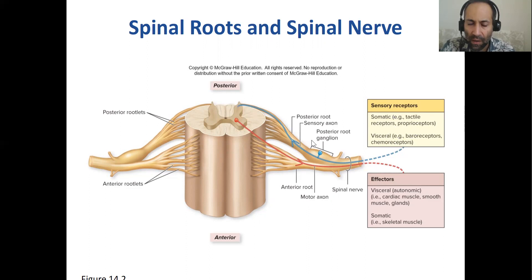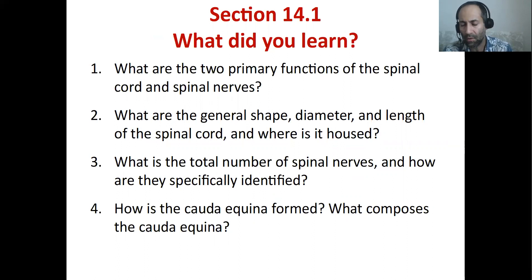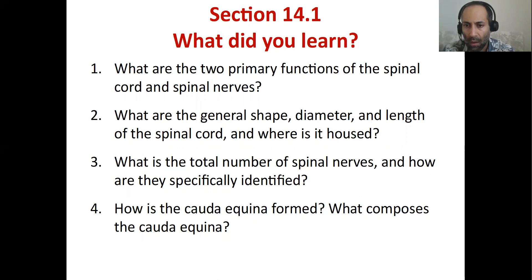The anterior motor root sends signals to your skeletal muscles in the somatic system, and also to your cardiac smooth muscle and glands — a visceral function. The two primary functions of the spinal cord are taking sensations from sensory organs to the brain, and taking commands from the brain back to the effector organs. The total number of spinal nerves is 31, identified based on the area of the spinal cord they emerge from.